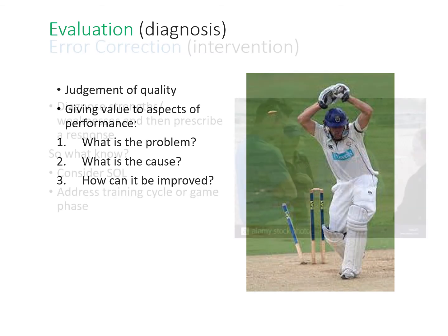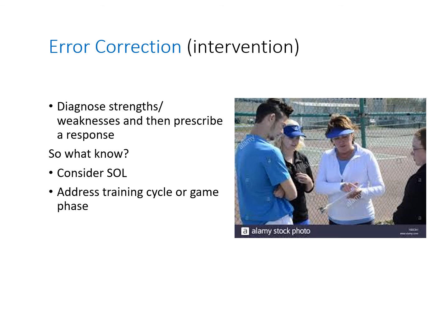Step four is error correction: once you've identified what's going well and what isn't, you set the course for improvement. For a cognitive-stage learner, what key information or practice elements are missing? For an autonomous-stage learner, what refinements can make them even better? Whether it's ball toss, foot placement, grip, racket angle, or strike point in a tennis serve, you direct that person toward specific things to work on — and the precision of your feedback also depends on where they are in their training cycle or game phase.